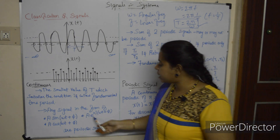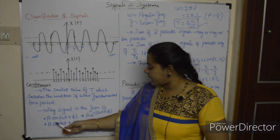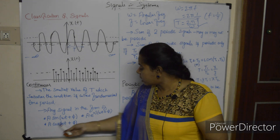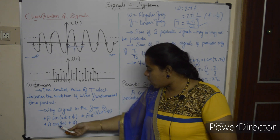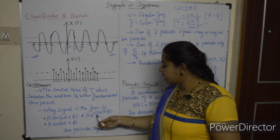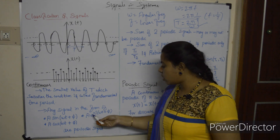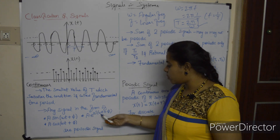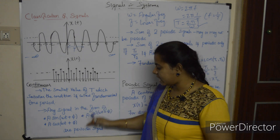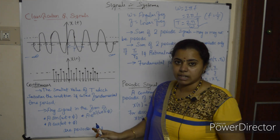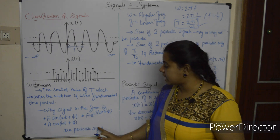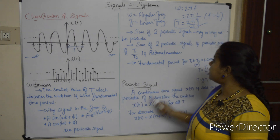Any signal in the form of A·sin(ωt + φ), A·cos(ωt + φ), or A·e^(±jωt + φ) — in the form of a sinusoid — is a periodic signal. This is the standard form. If a signal is in this form, then it is a periodic signal.